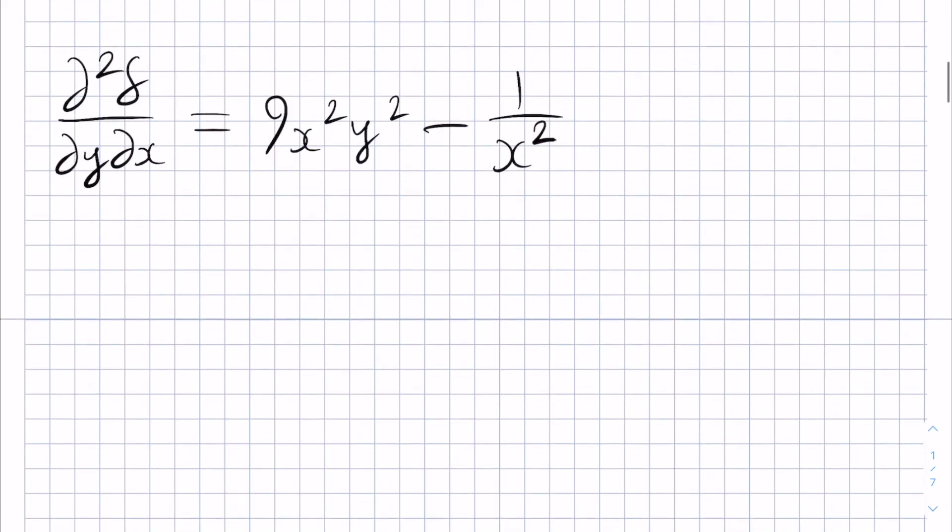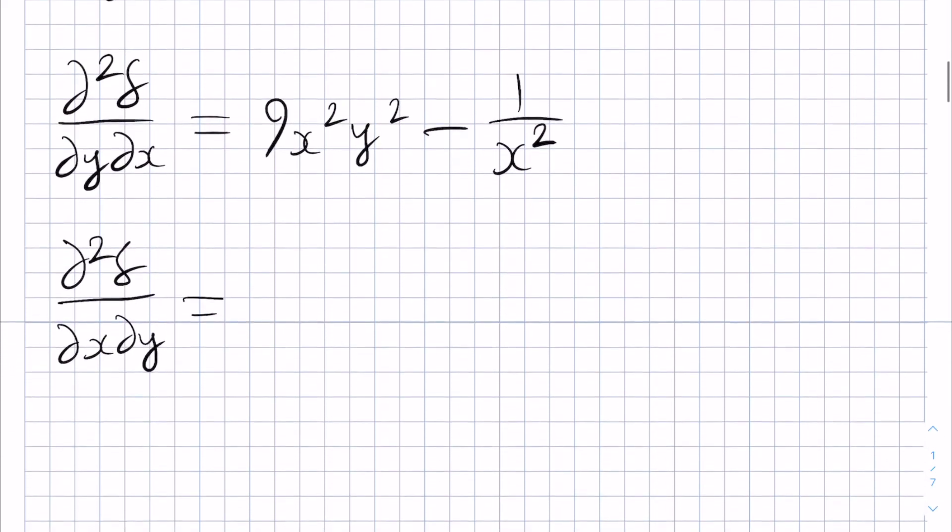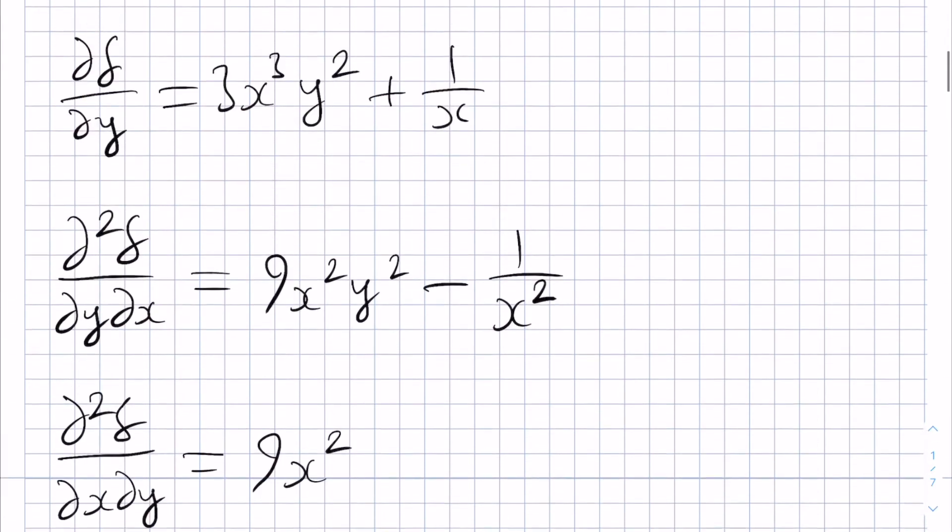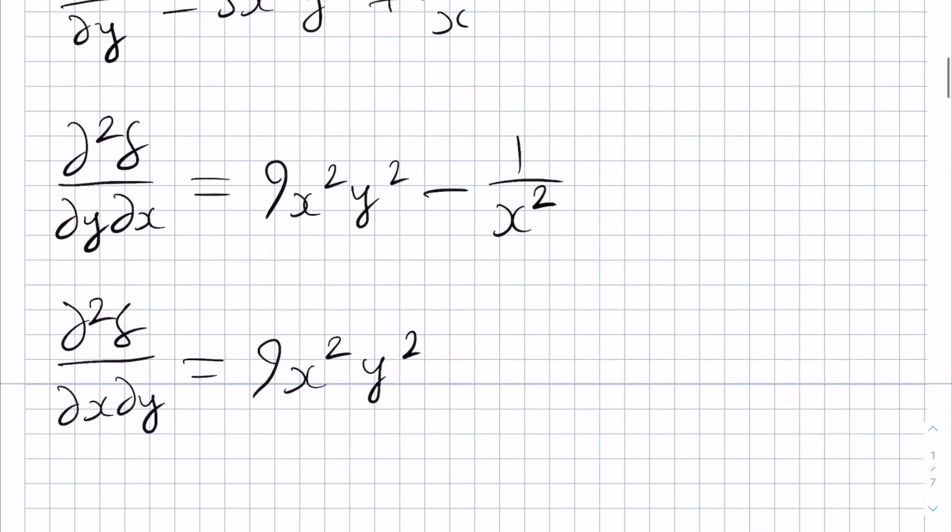Next, we do the other way around. So d squared f by dx dy. We take this thing here and differentiate with respect to x and that gives us 9x squared y squared minus 1 over x squared.